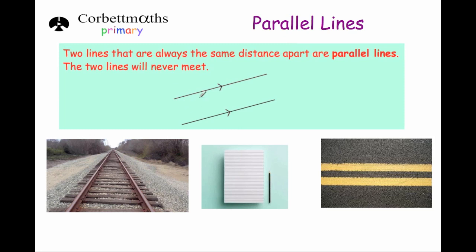Two lines that are always the same distance apart are called parallel lines. The two lines go in the same direction and they will never meet each other, and they're shown by two arrows, one on each line, here and here.